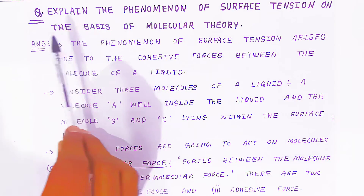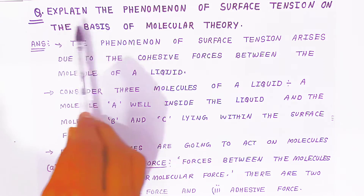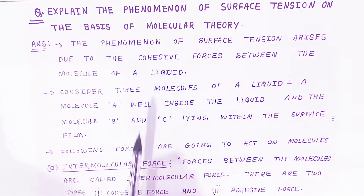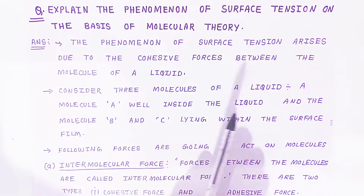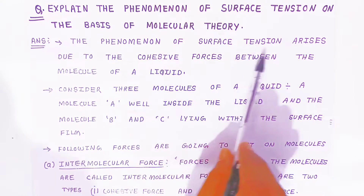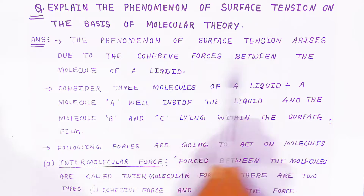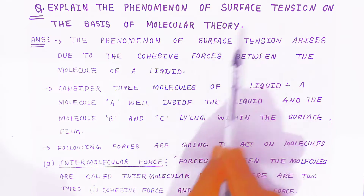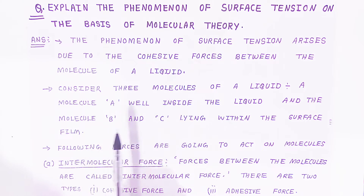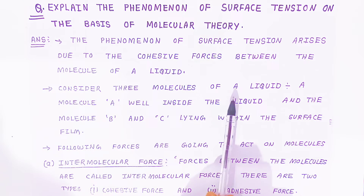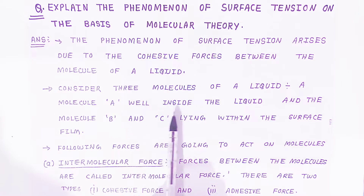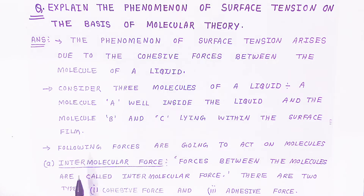Now for a 3-mark question: explain the phenomenon of surface tension on the basis of molecular theory. The phenomenon of surface tension arises due to cohesive forces between the molecules of a liquid. Consider three molecules A, B, and C. Molecule A is present inside the liquid. Molecule B is just touching the surface of the liquid, and molecule C is on the surface of the liquid.